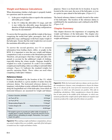Reference datum: Balance is determined by the location of the CG, which is usually described as a given number of inches from the reference datum. The horizontal reference datum is an imaginary vertical plane or point, arbitrarily fixed somewhere along the longitudinal axis of the helicopter, from which all horizontal distances are measured for weight and balance purposes. There is no fixed rule for its location — it may be located at the rotor mast, the nose of the helicopter, or even at a point in space ahead of the helicopter. Figure 6-3: The lateral reference datum is usually located at the center of the helicopter. The location of the reference datum is established by the manufacturer and is defined in the RFM. Figure 6-4.